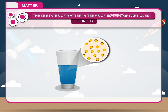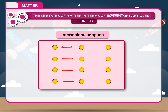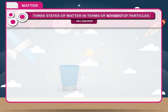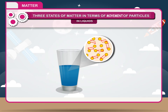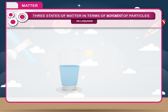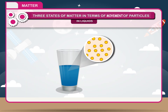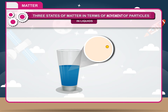In liquids, the molecules are less tightly packed. The intermolecular space between the molecules is large, so the intermolecular force is less. Due to less intermolecular force between molecules, the liquids do not have any definite shape. They acquire the shape of the container in which the liquid is kept. As the intermolecular force of attraction is less, molecules move from one place to another.